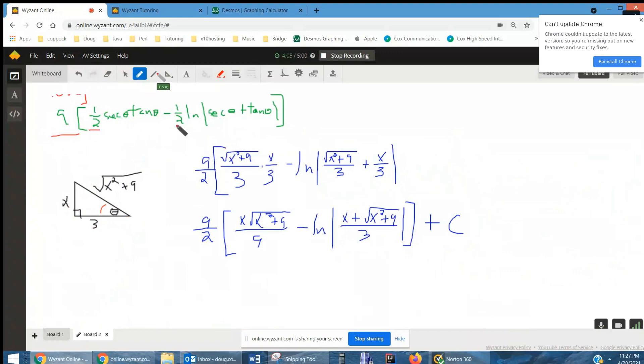Oh, by the way, I pulled out the one half and made it nine halves out front. Tangent of theta is opposite over adjacent x over 3. And there they are again.